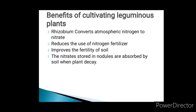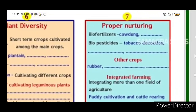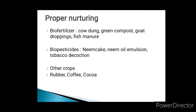What are the benefits? Rhizobium converts atmospheric nitrogen to nitrate. Atmospheric nitrogen and rhizobium bacteria are converted. This reduces the use of nitrogen fertilizer since we already have nitrates in the soil. The third benefit is improved fertility of the soil. Nitrates are stored in the nodules of leguminous plants. By cultivating leguminous plants, we gain the benefits of bio-fertilizers and bio-pesticides.